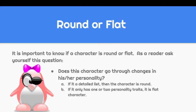Why is it important to know if a character is round or flat? You want to see whether these characters are changing the plot line and their personalities. Ask yourself: does this character go through changes in personality? If you can list how the character changed here and there, then yes, they are round. If the character has only one or two personality traits and keeps them throughout the story, that is likely a flat character with little or no change.